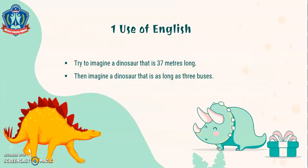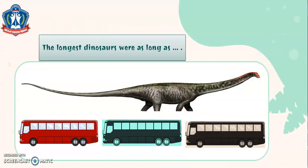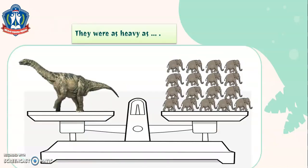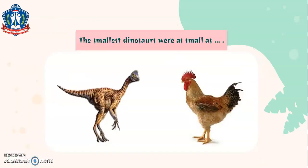For our first activity, it's Use of English. Try to imagine a dinosaur that is 37 meters long. Then imagine a dinosaur that is as long as three buses. Are you imagining now? Look at the picture. The longest dinosaurs were as long as — what is your answer? Write it down, children. They were as heavy as — what do you think? Write down your answer. And the smallest dinosaurs were as small as — blank. Write your answer, children, and we will check them together during our Zoom meeting.